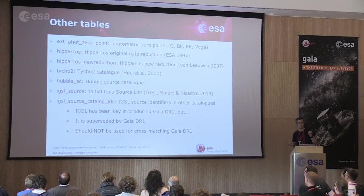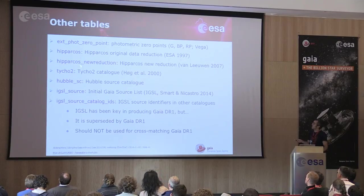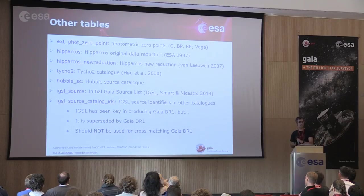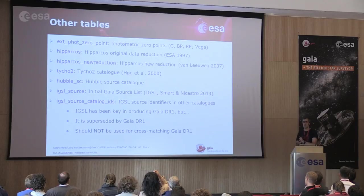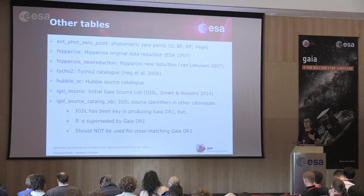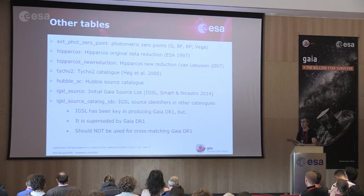Additional tables in the archive include the photometric zero points, the Hipparcos catalog, Tycho-2, the Source Catalog, and IGSL. Many questions have arrived about IGSL: 'the cross-match with IGSL is inconsistent with Gaia DR1' or 'my source ID in IGSL doesn't exist in Gaia DR1.' IGSL — the Initial Gaia Source List — was a key element in the production of Gaia Data Release 1, but the advice is: don't use it anymore. It served its purpose; start using the Gaia DR1 tables.